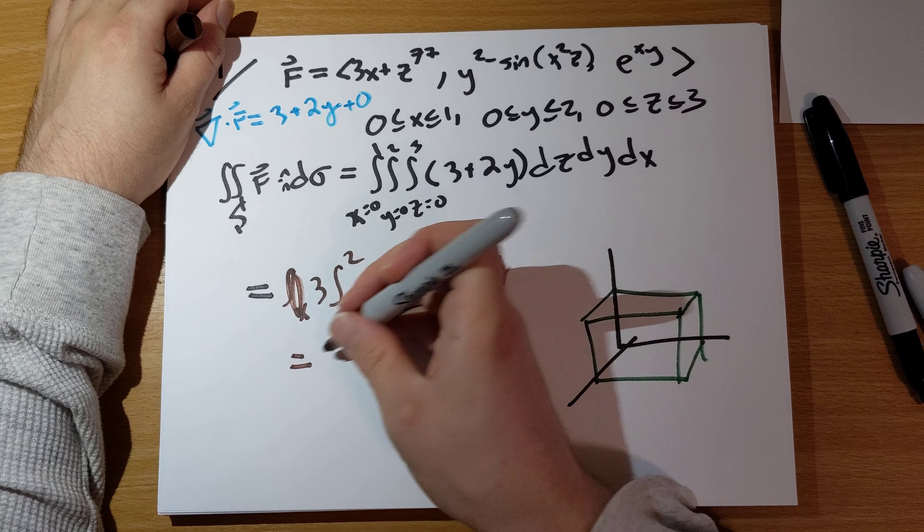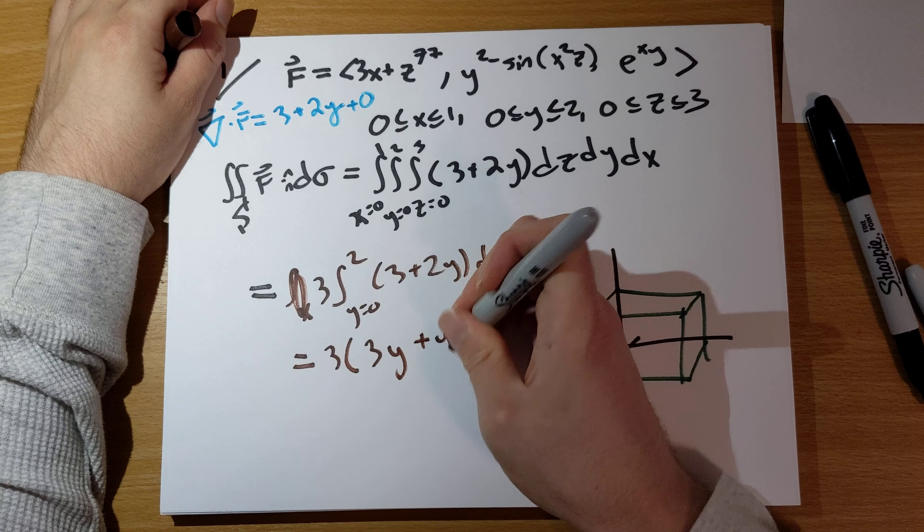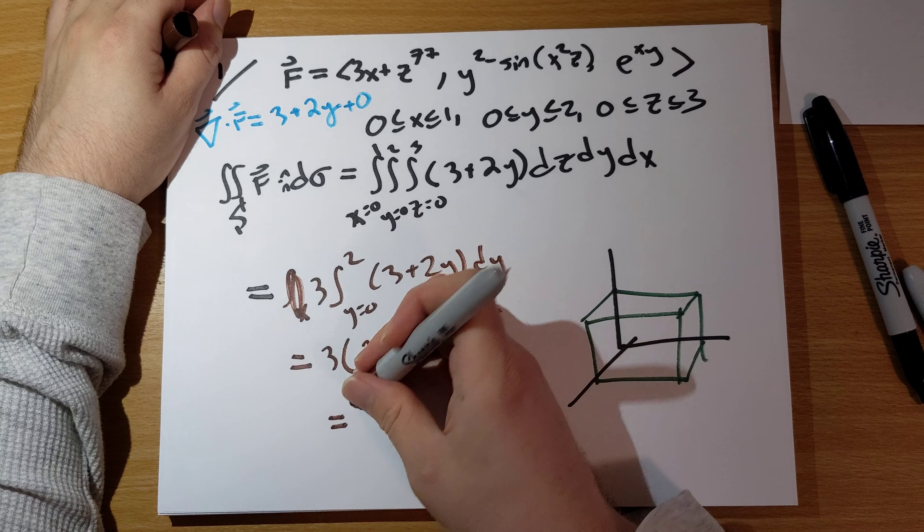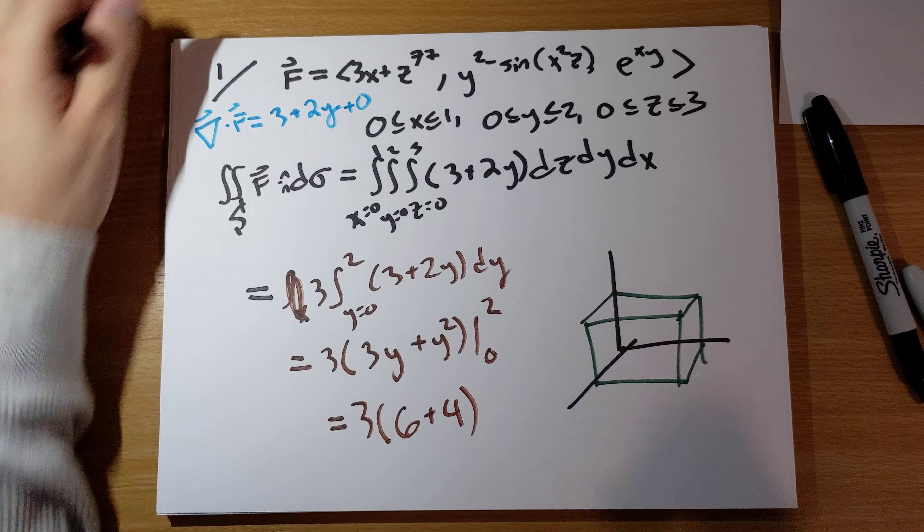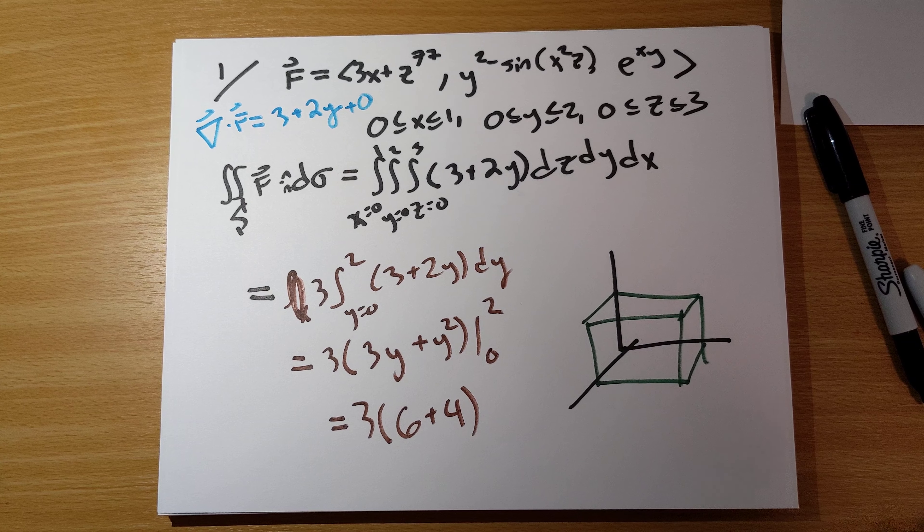So, 3 times 3y plus y squared, plug in 0 to 2. And so, we have 3 times 6 plus 4. That is problem number 1. Problem number 2 here.